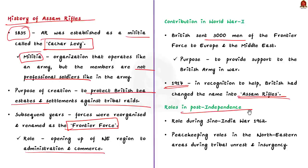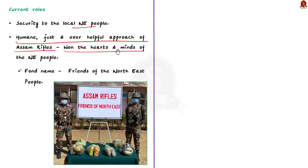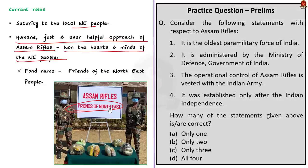In post-independence also, the Assam Rifles played a significant role during the Sino-India War in 1962. It also performed various peacekeeping roles in the Northeastern area during tribal unrest and insurgency. Today, the Assam Rifles remain deployed in some of the most remote and underdeveloped areas in the Northeastern states, continuously providing security to local people. Through its long deployment in the tribal belt, the Assam Rifles has earned the complete confidence of locals. The humane, just, and ever-helpful approach of its members has truly won the hearts and minds of the Northeastern people, so its members are fondly called friends of the Northeastern people.